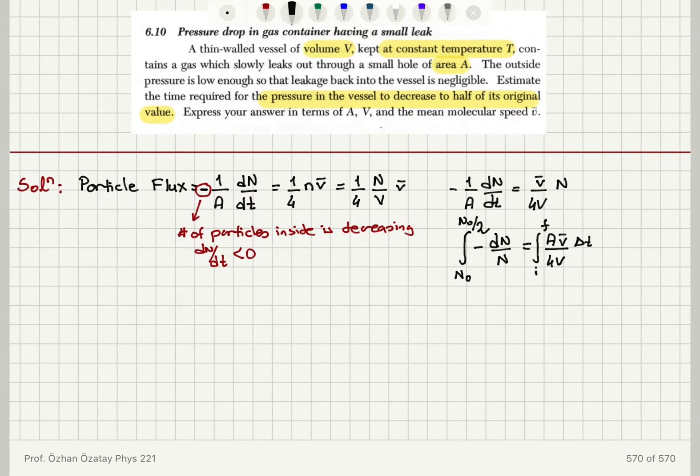Why did I say that? Because the ideal gas law is P-bar equals NkT. So it is the number divided by volume V multiplied by kT. I have a constant temperature T and constant volume V. Therefore, as N decreases, P-bar decreases.